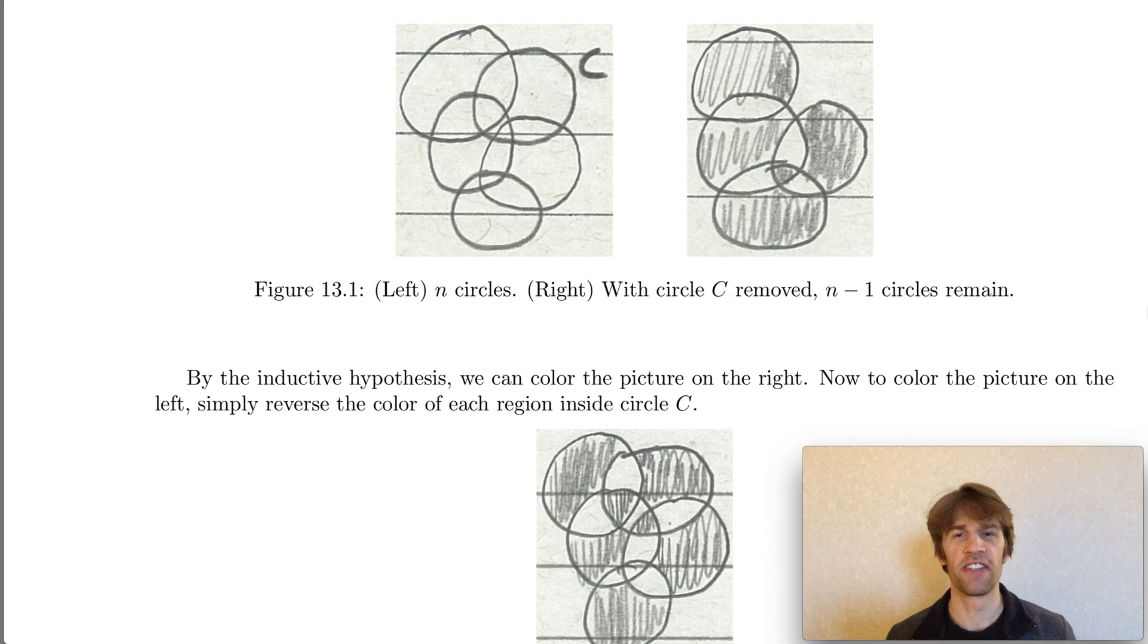So pretend we're given the n circles drawn in the plane, and in the figure on the top left n is equal to five. And we'll remove one of these circles, call that circle C that we remove, giving us the drawing of n minus one circles, here four circles on the top right. By our inductive assumption we can color these remaining regions formed by n minus one circles with our two colors.